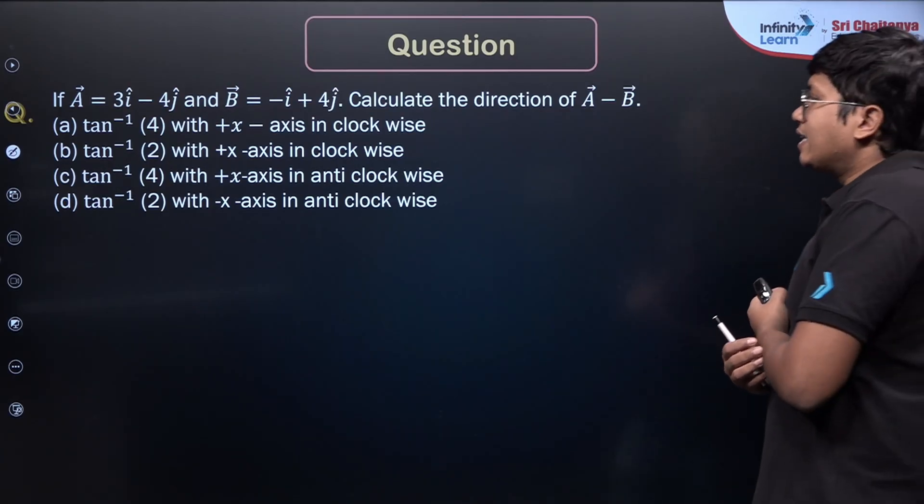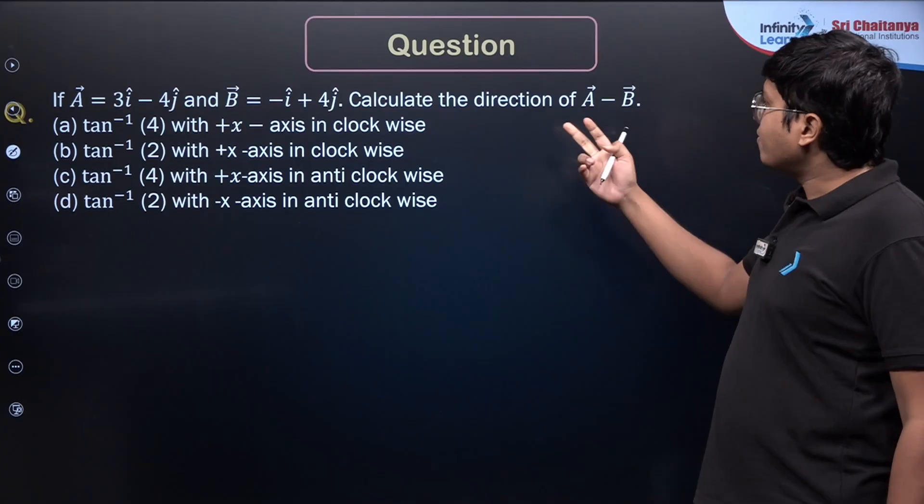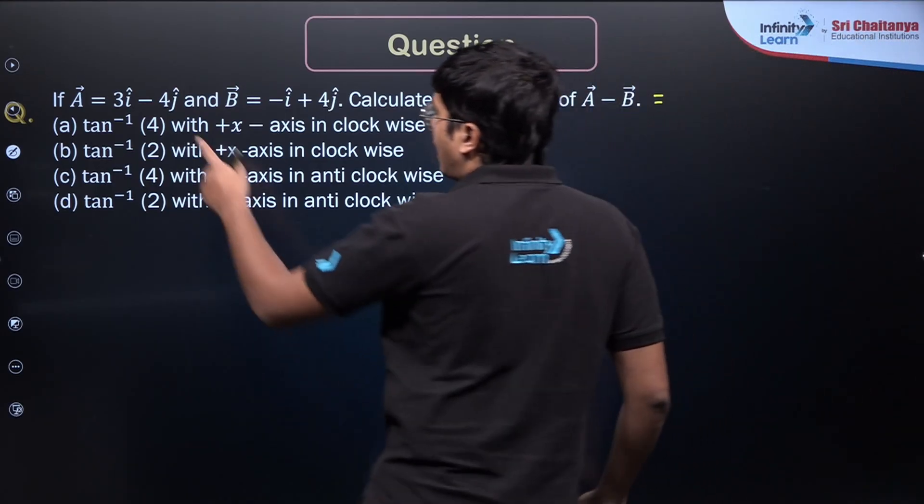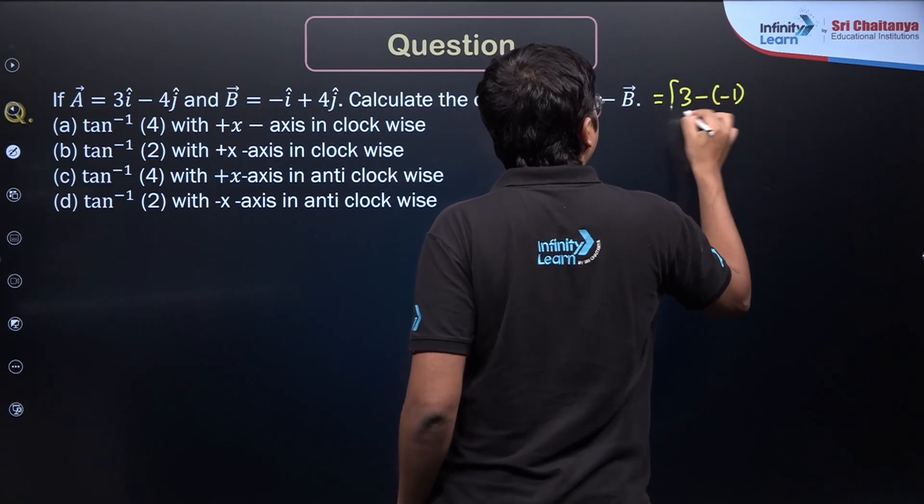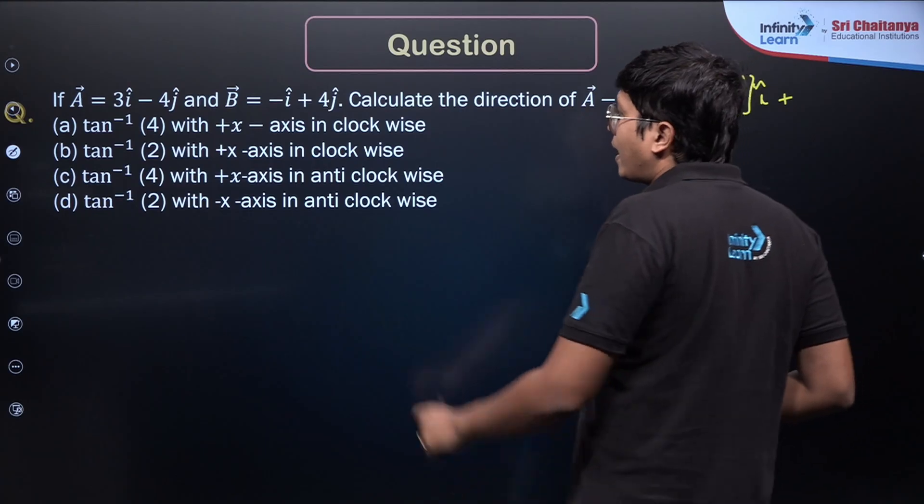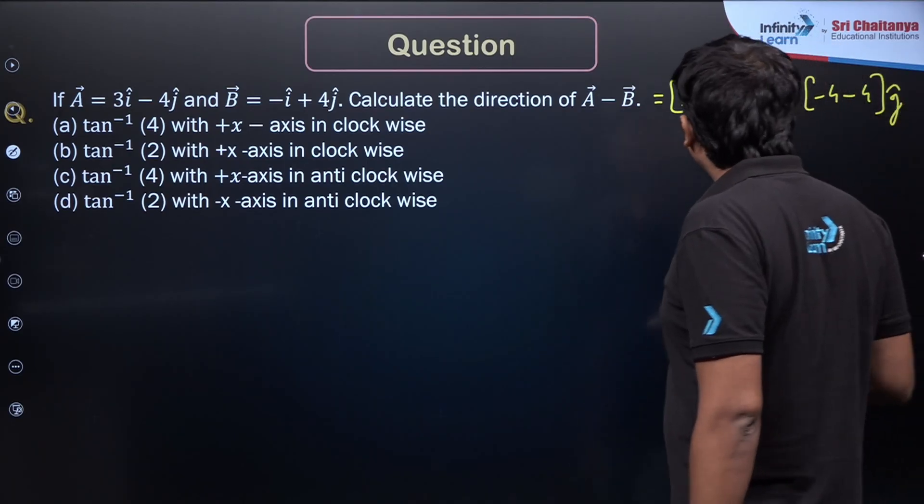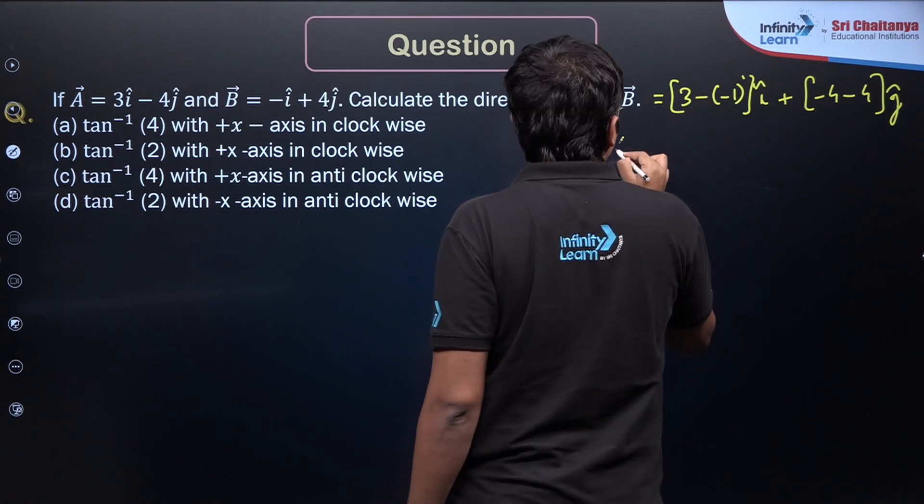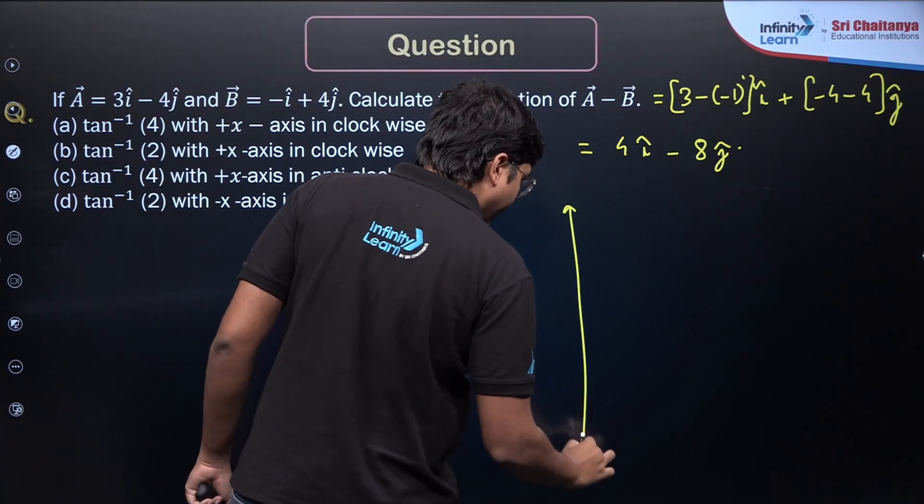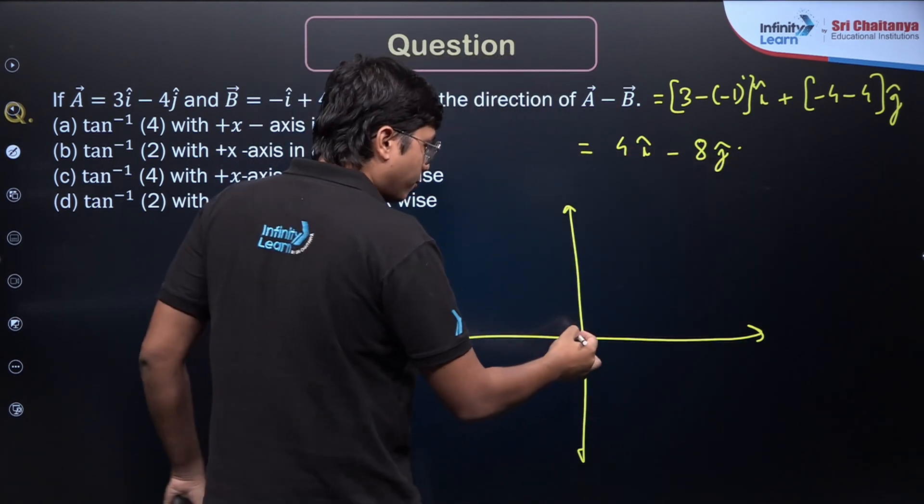We go for the next one. It says A vector is given 3i cap minus 4j cap, and B vector is given minus i cap plus 4j cap. They have asked that we need to find the direction of A vector minus B vector. So let's do A vector minus B vector. What will I get? Look at the i caps: I have 3 minus of minus 1 i cap, and what do I have for j cap? For j cap, I have minus 4 and here there will be another minus 4. So what do I get? Here I get A minus B is equal to 3 plus 1, 4 i cap. Here it is minus 8 j cap.